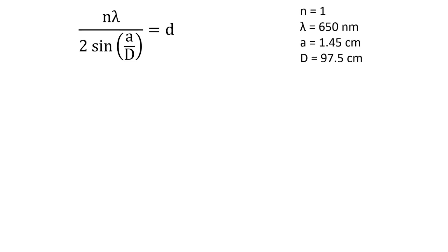First, let's list all of the measured values we'll use in this equation. n equals 1, lambda is 650 nanometers, a is 1.45 centimeters, and big D is 97.5 centimeters.